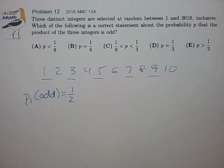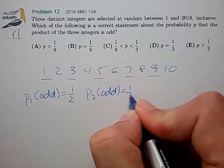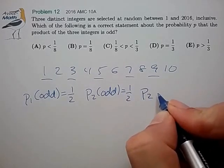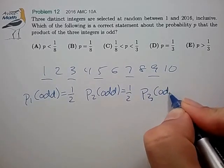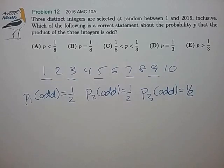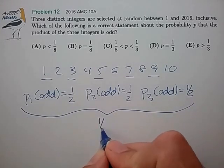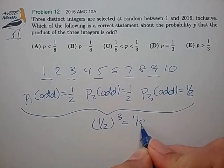Now if we chose the second integer such that we could choose a duplicate integer, then the probability for choosing the second integer to be odd would be the same. That also would be a half. And for the third integer, that would be a half. And the probability that all three integers are selected to be odd in this simplified case would be 1 half to the third, and that's 1 eighth.